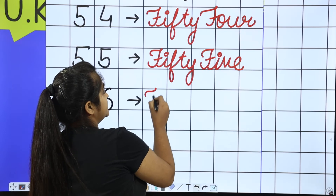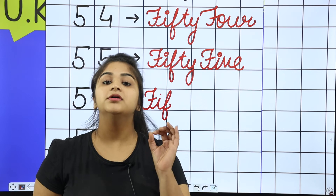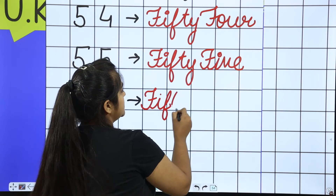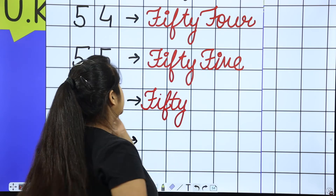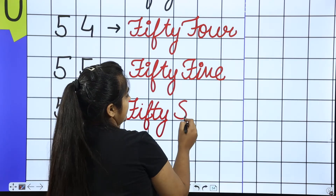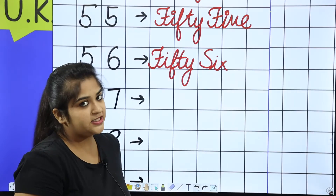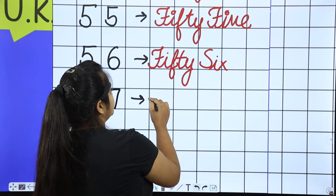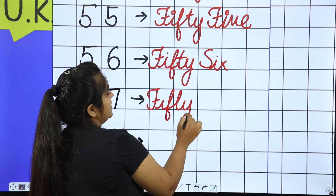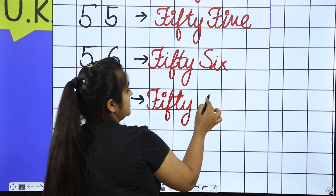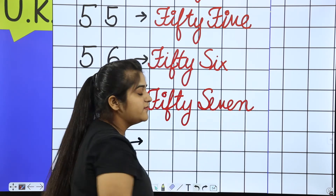Next is 56. F-I-F-T-Y, what does it become? Then S-I-X. So 56 is FIFTY SIX. Next is 57. F-I-F-T-Y, then S-E-V-E-N. So 57 is FIFTY SEVEN.